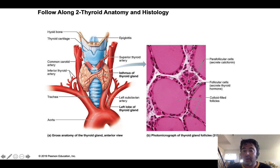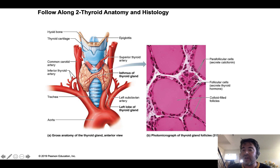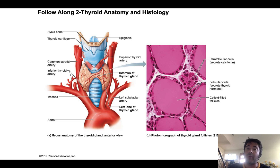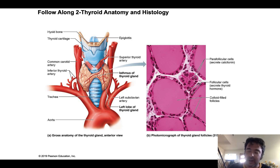Cells that are not part of follicles are called parafollicular cells, and they secrete a hormone called calcitonin, which has a completely separate function from thyroid hormone. Calcitonin plays an important role in the regulation of blood calcium, though nowhere near as important as the parathyroid gland, which we'll discuss in the next lecture.